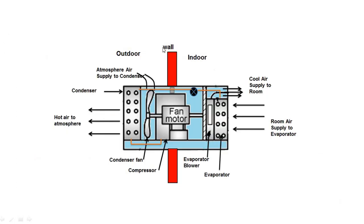In the window air conditioning system, it has three disadvantages. First, the compressor is in the same unit so the noise of the compressor creates disturbance. Second, it requires proper space on the window or a proper frame to fit onto the window. Third, it cannot be installed in the room for decorative purposes.